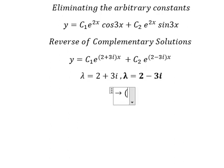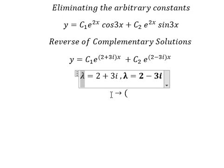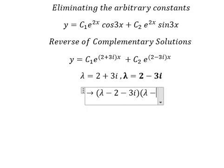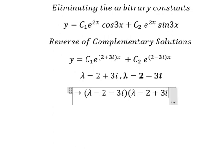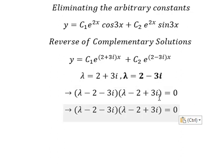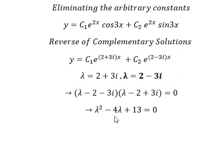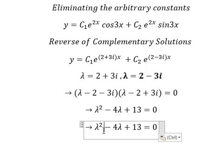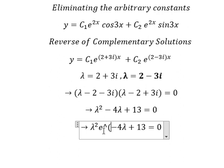So that means we have two factors here. The first one is (lambda minus (2 minus 3i)) and (lambda minus (2 plus 3i)) equals zero. Now if we expand this, we then multiply by e to the power of lambda s, so it should look like this.